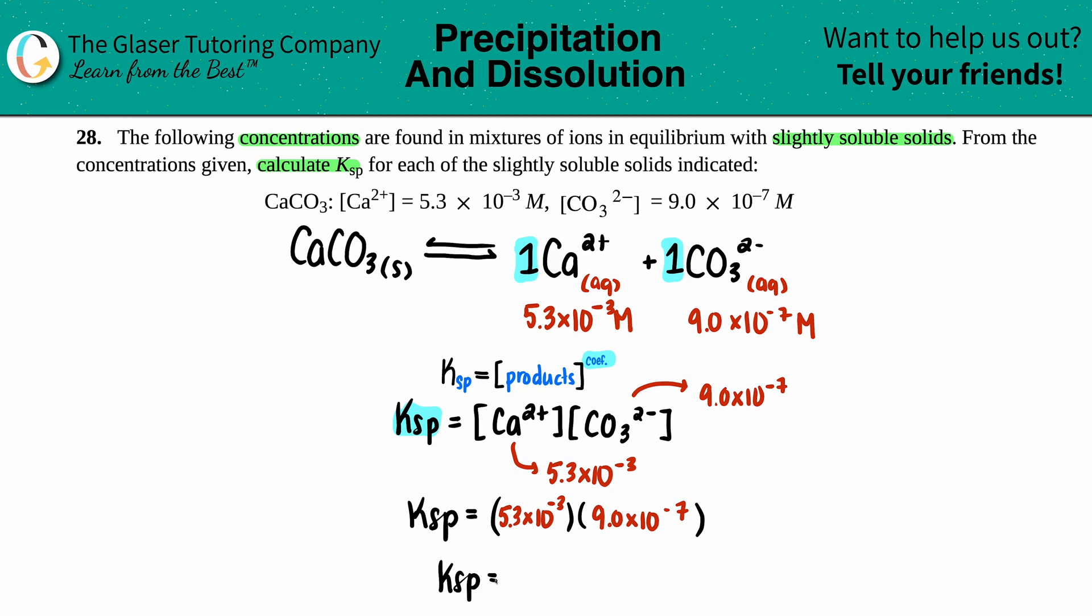If we do two sig figs, we get 4.8—in the calculator I see 4.77, but I'll round to 4.8×10⁻⁹. And that is it.